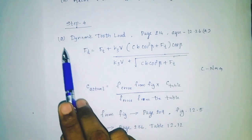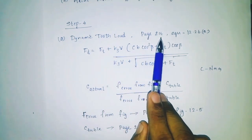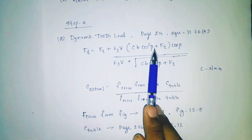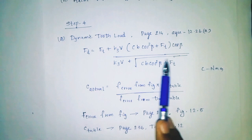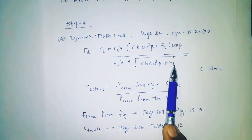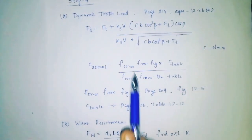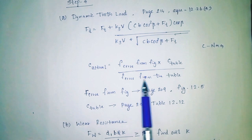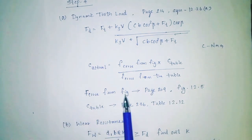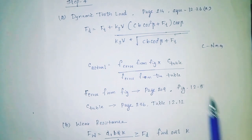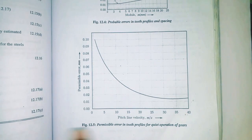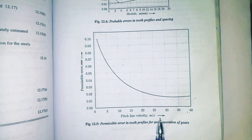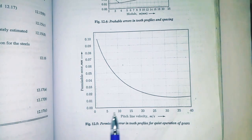Step 4: Find the dynamic load Fd. Page number 214, equation 12.26a: Fd = ft + [k3·V × (C·b·cos²β + ft) × cosβ] divided by [k3·V + √(C·b·cos²β + ft)]. C is found from the figure: Vr from figure (page 229, figure 12.5) multiplied by C from the table, divided by Vr from the table.